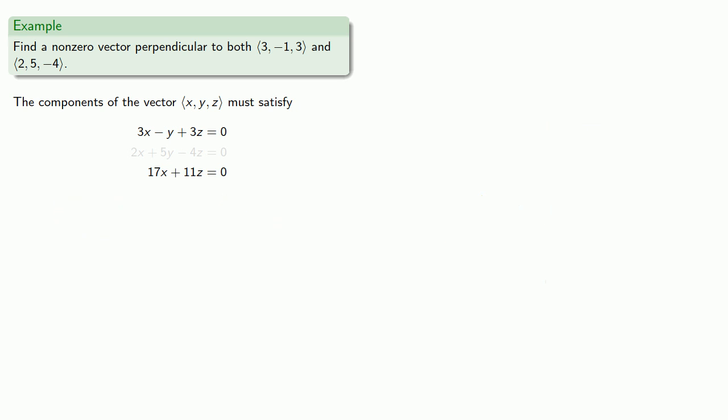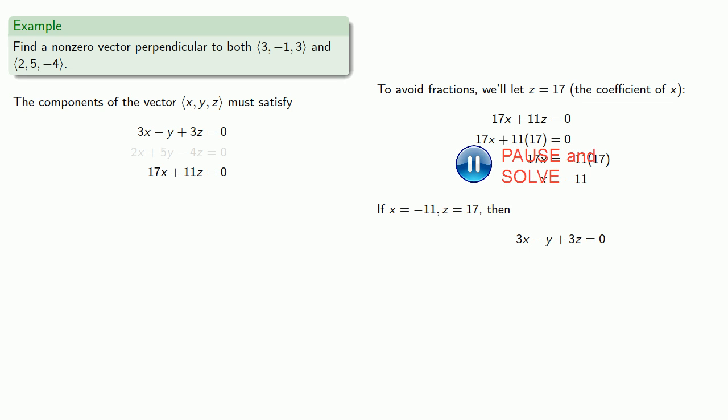So again, we'll choose a value for z, and notice that we'll be dividing by 17, and so to avoid fractions, we'll let z equal 17, the coefficient of x, and this gives us -11, and if x equals -11, z equals 17, we find y. And that gives us our orthogonal vector.